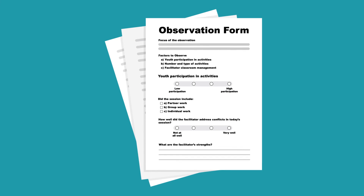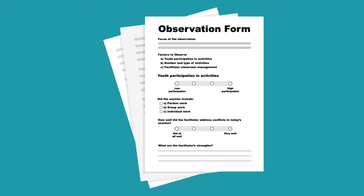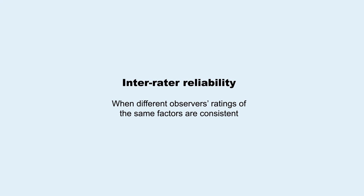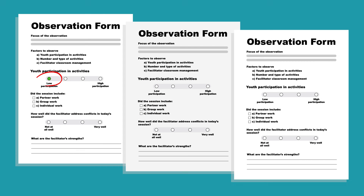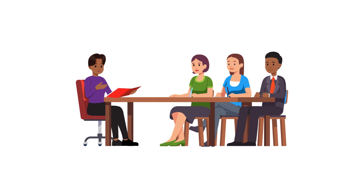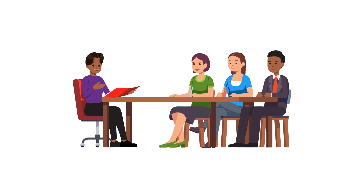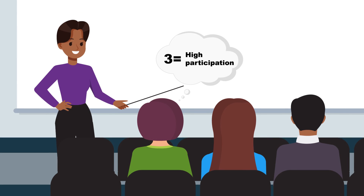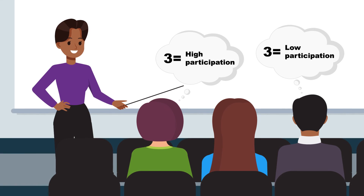Finally, once observers have conducted several observations independently, check for inter-rater reliability. Inter-rater reliability is when different observers' ratings of the same factors are consistent. For example, if one observer rates youth participation at zero on a four-point scale, a second observer rates participation at one, and a third rates youth participation at three, this wide variation among observers' ratings would produce a low inter-rater reliability score for this factor. Low inter-rater reliability signals additional training is required, as observers might be interpreting items differently or their understanding of what each rating represents might differ.